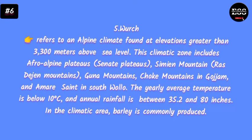The fifth zone, Wurch, refers to an alpine climate found at elevations greater than 3300 meters above sea level. This climate zone includes the Afro-alpine plateaus, Sanetti plateau, Simien Mountains, Ras Dashen Mountains, Guna Mountains in Gojjam, and Amara Sayint in South Wello. The yearly average temperature is below 10 degrees centigrade and annual rainfall is between 35.2 and 80 inches.